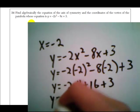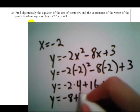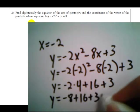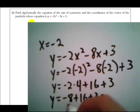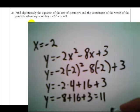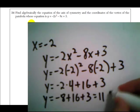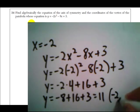So y equals, this is going to be negative 8 plus 16 plus 3. I'll work that all out. Negative 8 and 16 is positive 8 plus 3 is 11. So the coordinates of the vertex are going to be negative 2, 11.